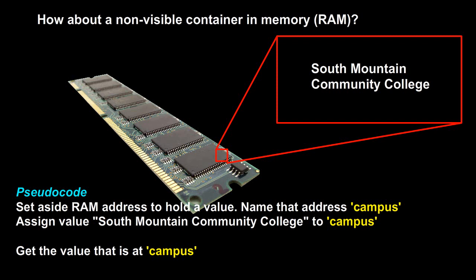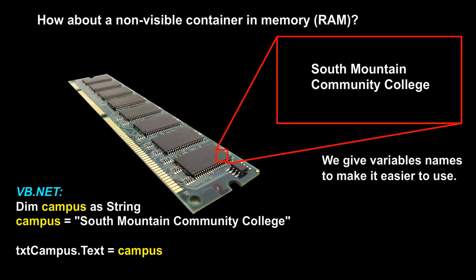Back to our pseudocode — we want to set aside a RAM address and give it a meaningful name, then assign some value to that name that we can later retrieve. If we were to write this in VB code, the statement to assign a piece of RAM is called DIM, which stands for dimension. So my statement would be: DIM campus as string. Campus is my variable name, string is a data type, and I'm telling VB to set aside a piece of memory, name it campus, and it's going to contain a string value — an alphanumeric character value or set of characters. To assign a value, we say campus equals, and assign it a literal string of South Mountain Community College in quotes. By putting it in quotes, the compiler understands it's a literal string.